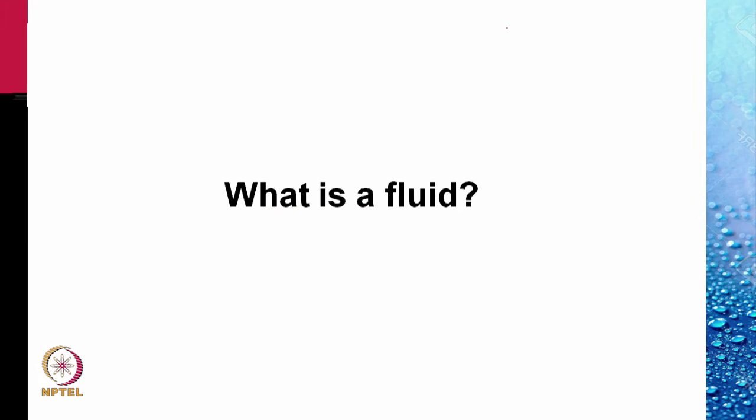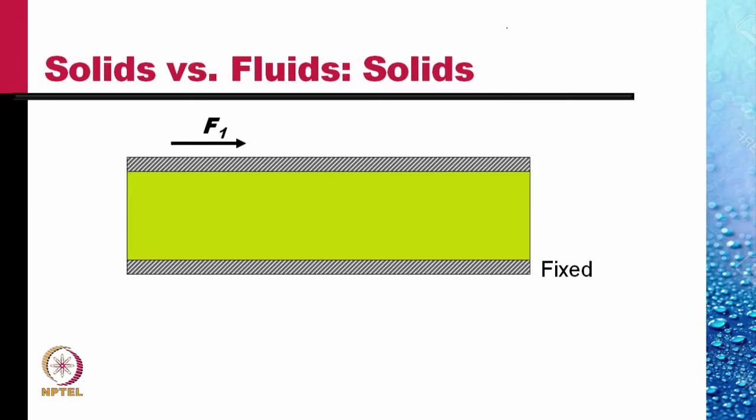What is a fluid? A fluid is something that flows. What does flowing mean? Let us take this example. The two flat plates shown hatched, between which there is a green substance. The lower plate is fixed, on the upper plate we apply a force F1.